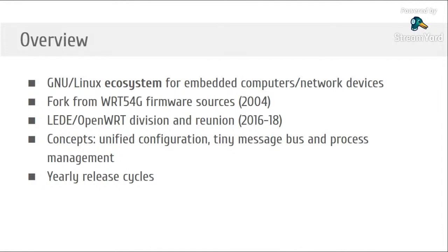What exactly is OpenWRT? OpenWRT is a little bit more than a regular Linux distribution. It's more like an ecosystem for embedded computers and especially for network devices. It was designed to run on very low-end embedded computers such as commercial Wi-Fi routers, and it runs on a variety of boards like the Raspberry Pi, Onion boards, and many others.